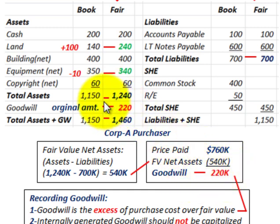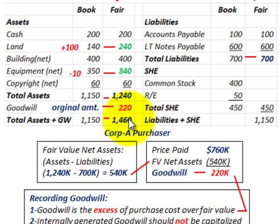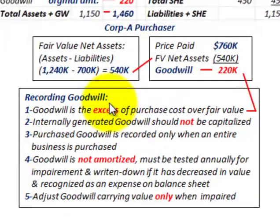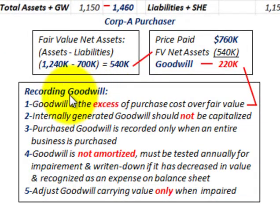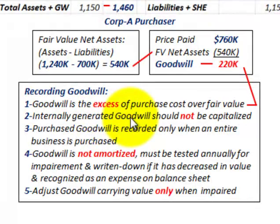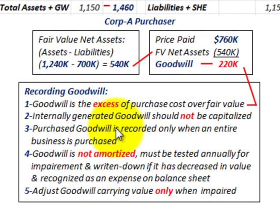We plug in our goodwill at the purchase date of $220,000, making total assets plus goodwill equal to $1,460,000. Now, recording goodwill: goodwill is the excess of the purchase cost over the fair value of net assets received. Internally generated goodwill should not be capitalized. Purchase goodwill is recorded only when the entire business is purchased — in this case, Corporation A purchased all of Corporation B.